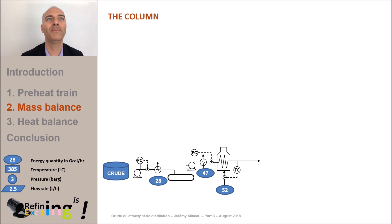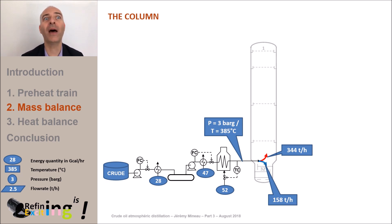I remind you that the crude has been partially vaporized in the furnace at a temperature of 385 degrees C. At this temperature and at a pressure of 3 bar G, about 70% of the crude is vaporized. This means that about 344 tons per hour of gas and 158 tons per hour of liquid enter the column. This column is typically equipped with about 30 to 50 trays. In our case we will consider 32.